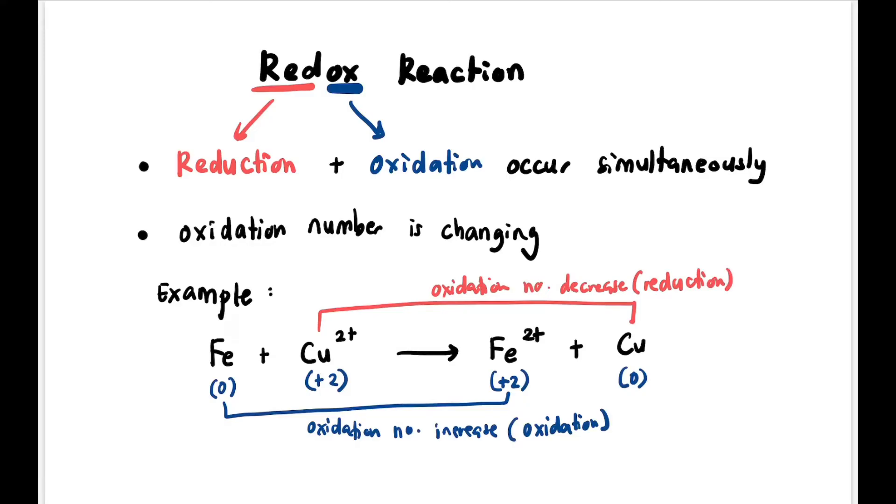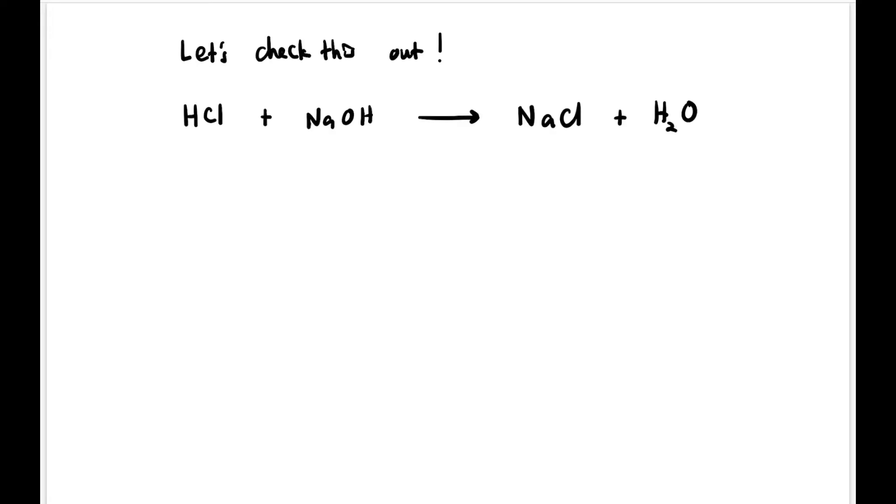So if the oxidation number increases, that is oxidation. If the oxidation number decreases, that is reduction. So this is a redox reaction. How do we know if a reaction is a redox or non-redox? It's easy - we list down each element's oxidation number one by one, and then check if there are any changes.